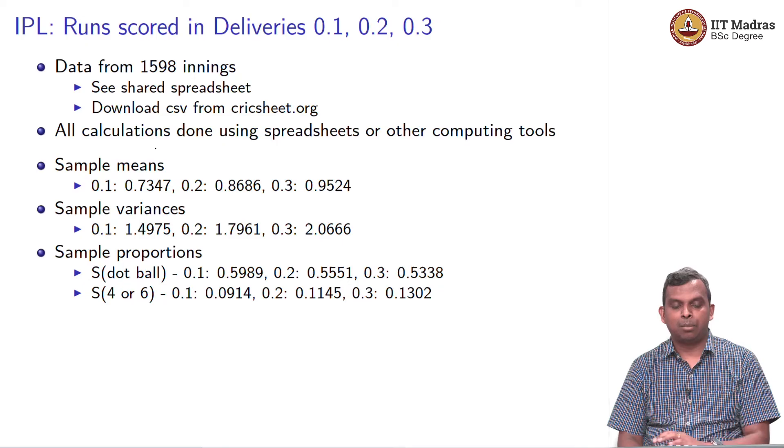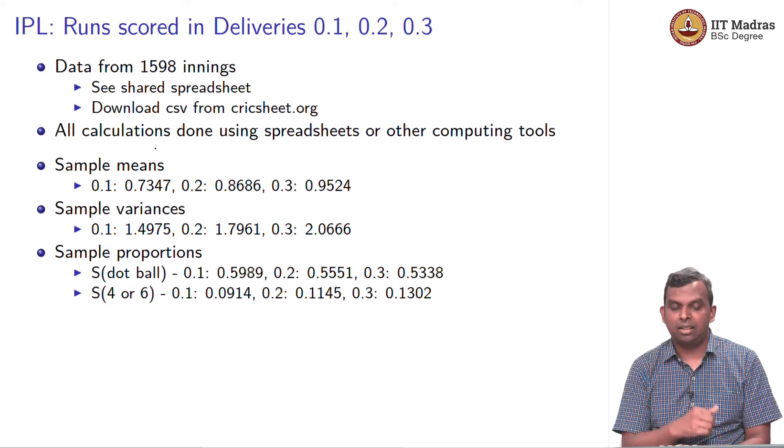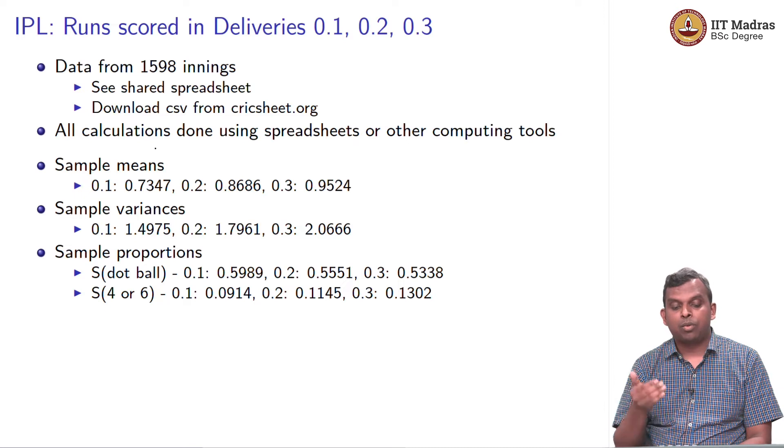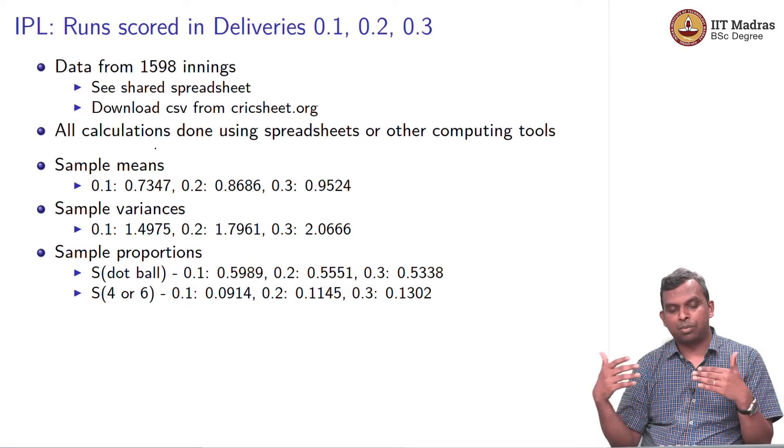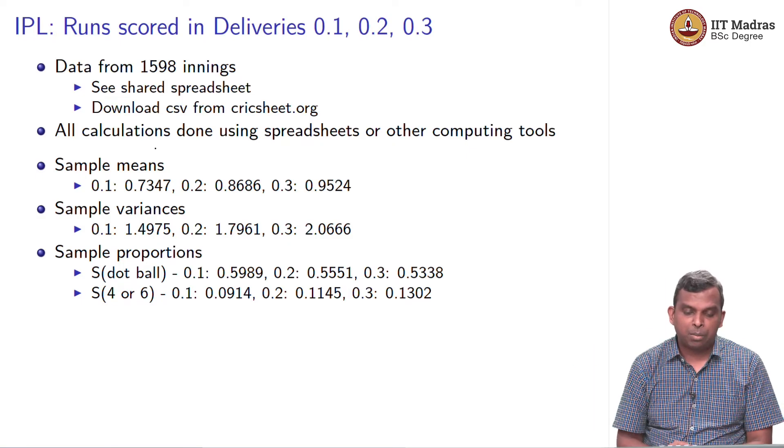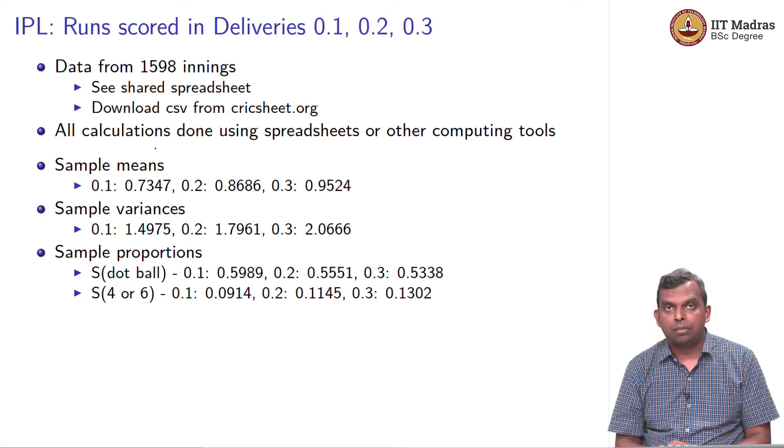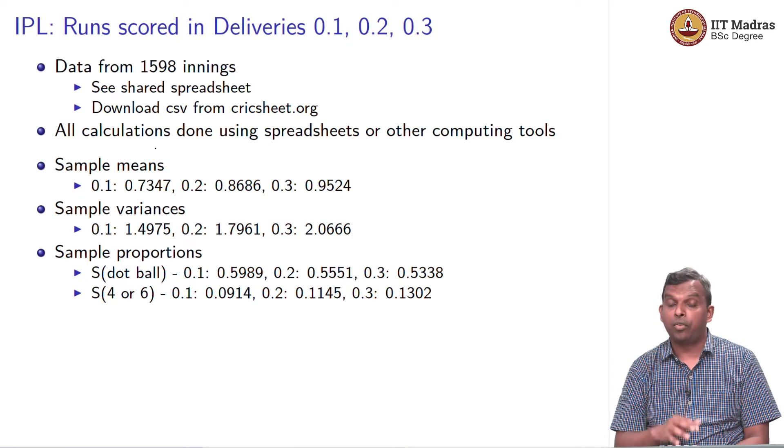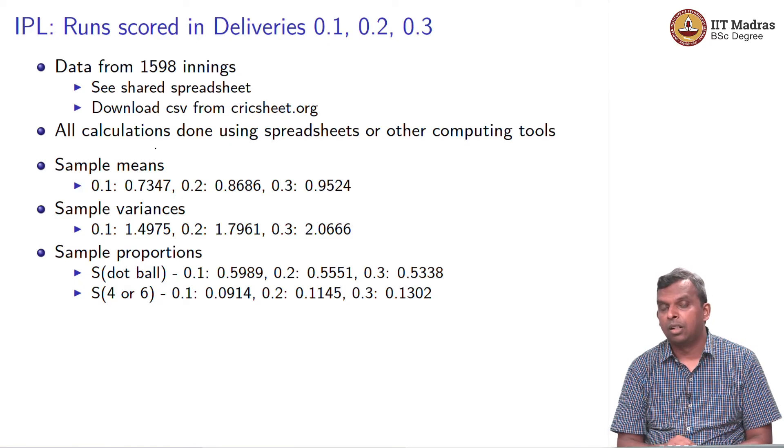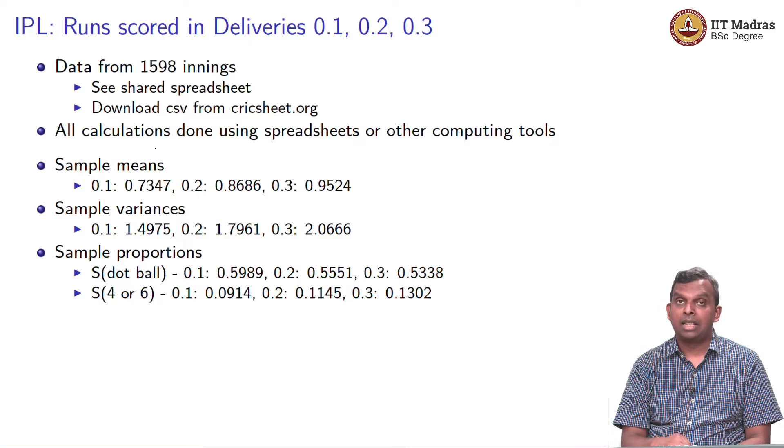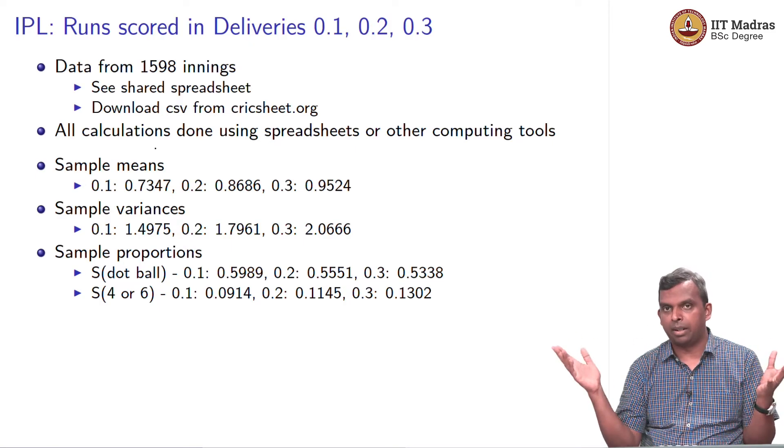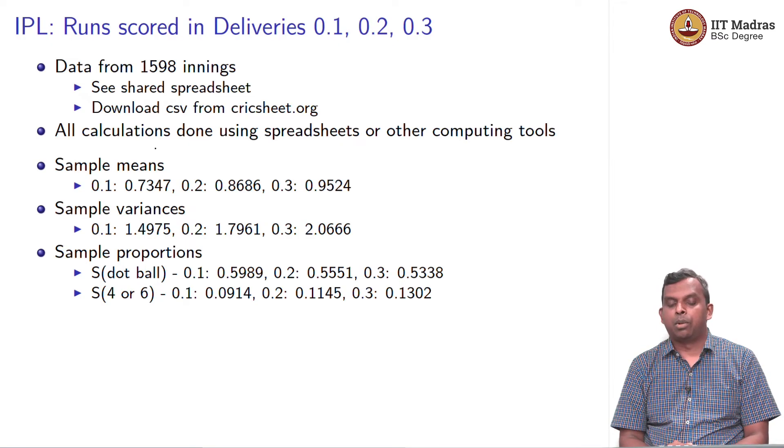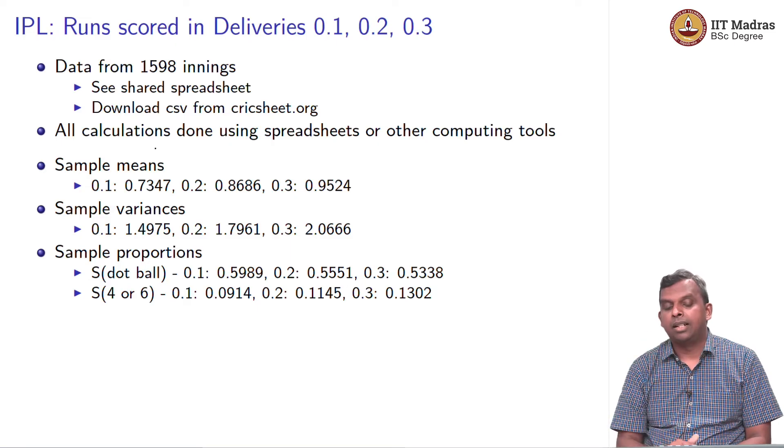What are sample means? Here are sample means. For 0.1, the sample mean is 0.73, then 0.87, and then 0.95. What are the sample variances? 1.5, 1.82, 2.1 or something. That is the variances between 0.1, 0.2, 0.3. And a few proportions that may be of interest. Proportion of dot balls in 0.1 is 0.5989. Basically about 60 percent of the first delivery were dot balls, about 55 percent of the second delivery were dot balls, 53 percent of the third delivery were dot balls. The next proportion I am interested in is a 4 or a 6, a boundary hit. In 0.1, about 10 percent of the deliveries were boundaries, 11.45 in 0.2 and 13 percent in 0.3.